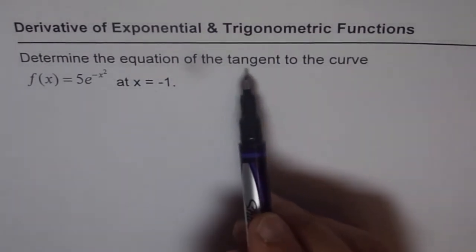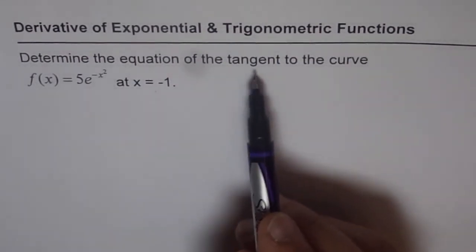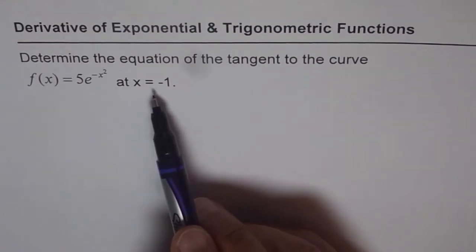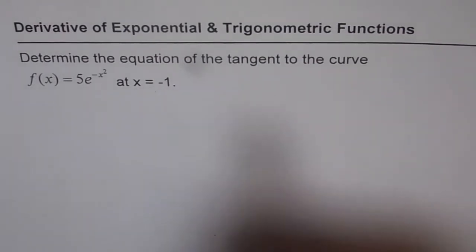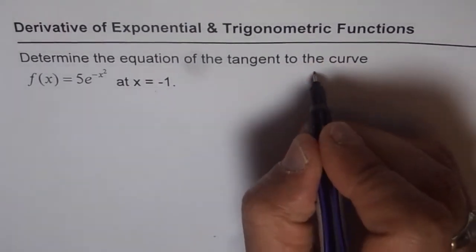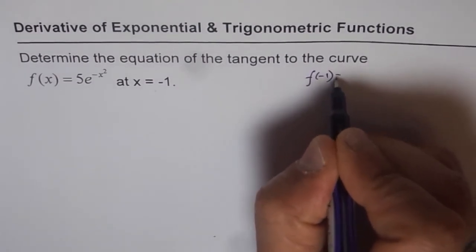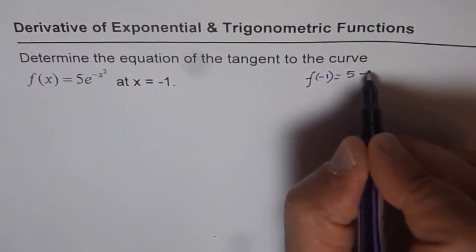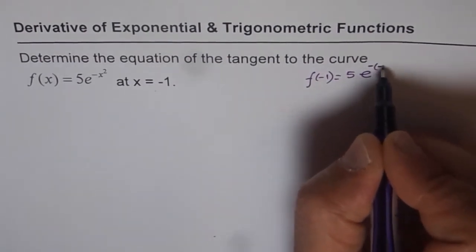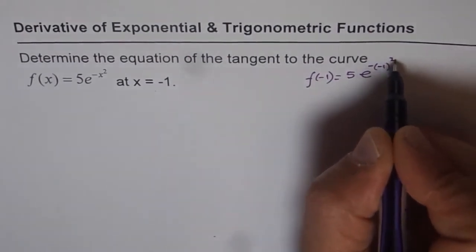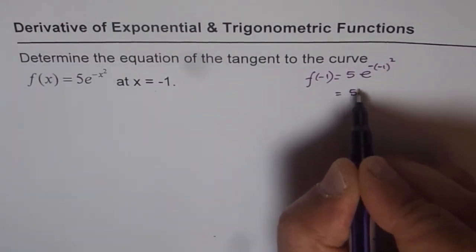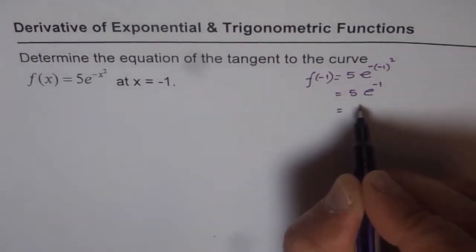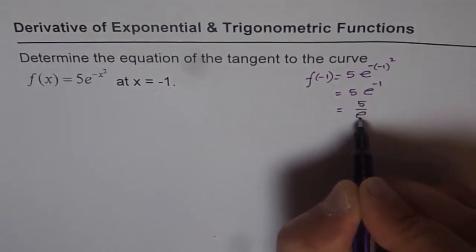Since we need to find the equation of the tangent, we need to find the point coordinates — we only know the x value — and also the slope. So let's find the y value first. f(-1) = 5 times e to the power of minus (-1)², which is 5 times e to the power of minus 1.